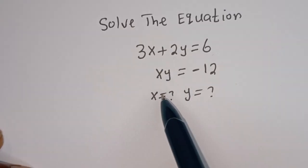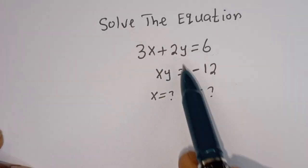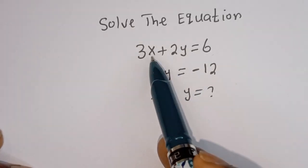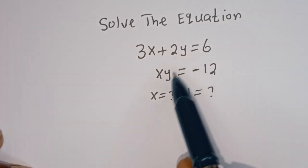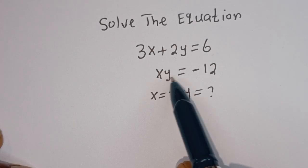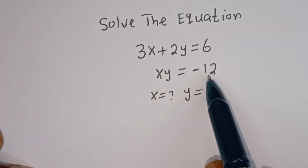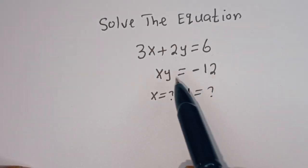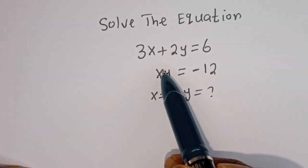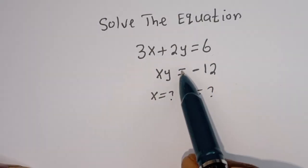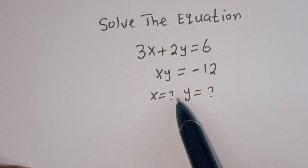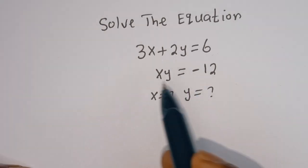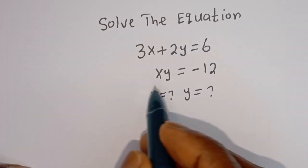Hello. How to solve for x and y in this equation: 3x plus 2y is equal to 6, and xy is equal to minus 12. But before we proceed, please don't forget to like, share, comment and subscribe to my channel. Thank you.